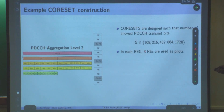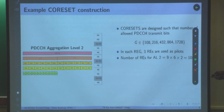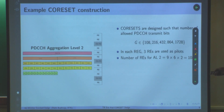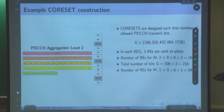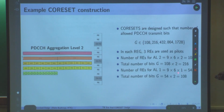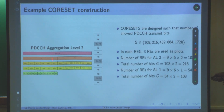In summary per REG: 3 REs are used as DMRS pilots; 9 REs remain for data per REG. For aggregation level 1: 54 REs, 108 bits. For aggregation level 2: 108 REs, 216 bits. This is along the frequency axis. Now I will tell you about the time-domain duration — how many OFDM symbols the CORESET spans and how frequently it occurs.